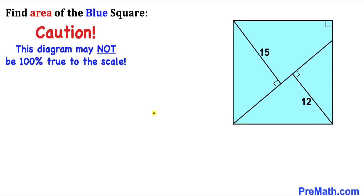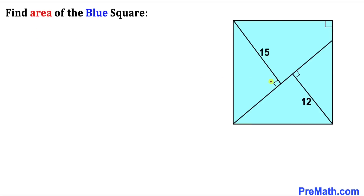Let me make it very clear that this figure may not be 100% true to the scale. Let's get started. We know that we are dealing with this blue square, so therefore each side length is going to be the same. Let me go ahead and call this side length x units — then all side lengths are going to be x units as well across the board.